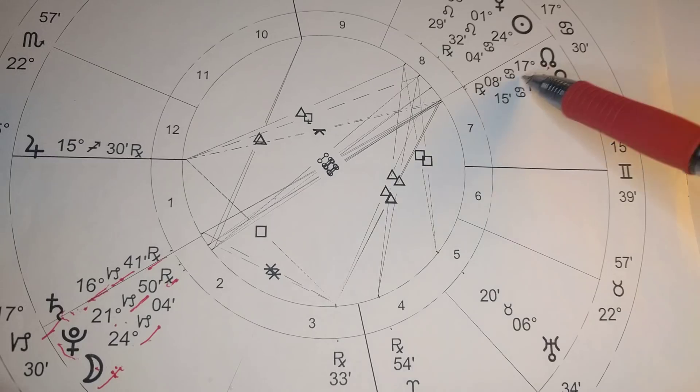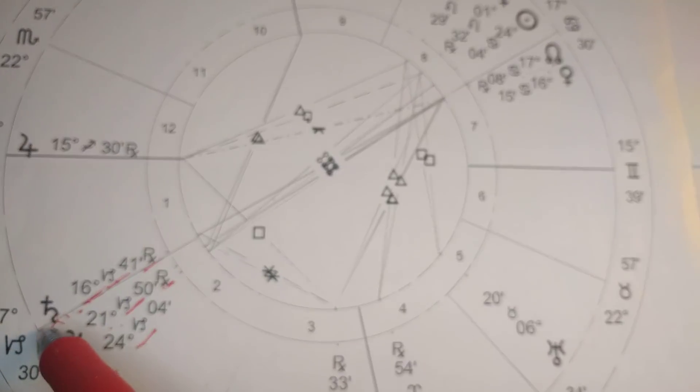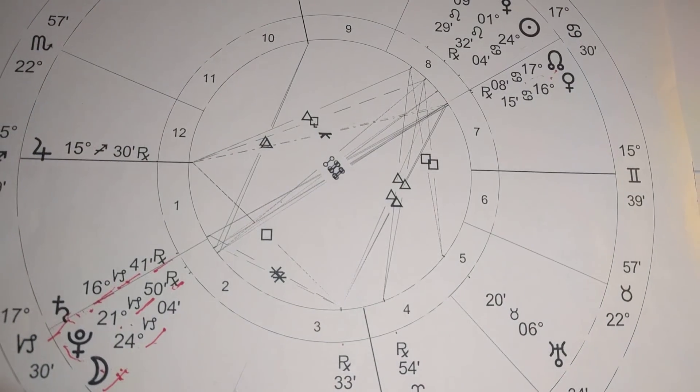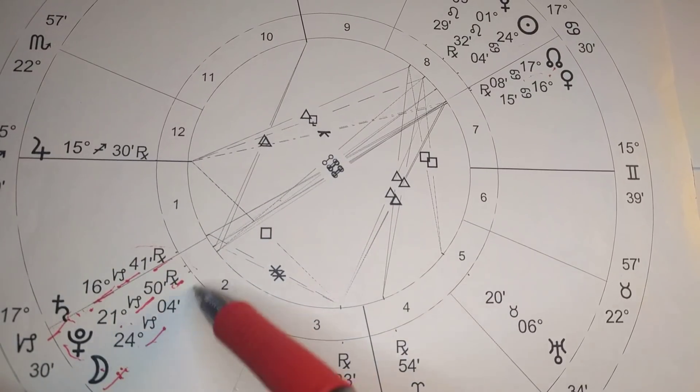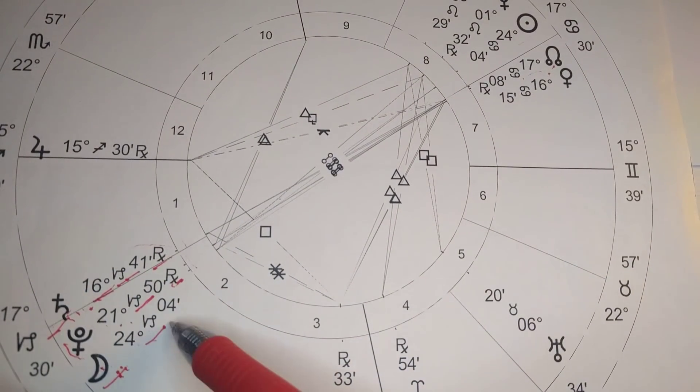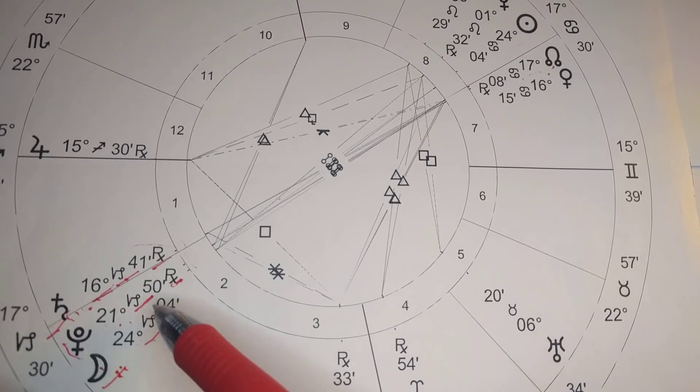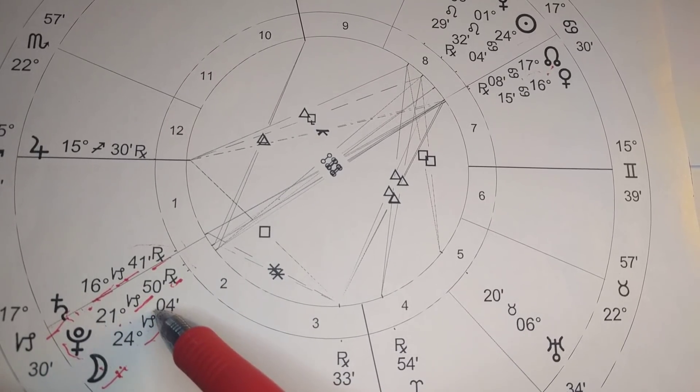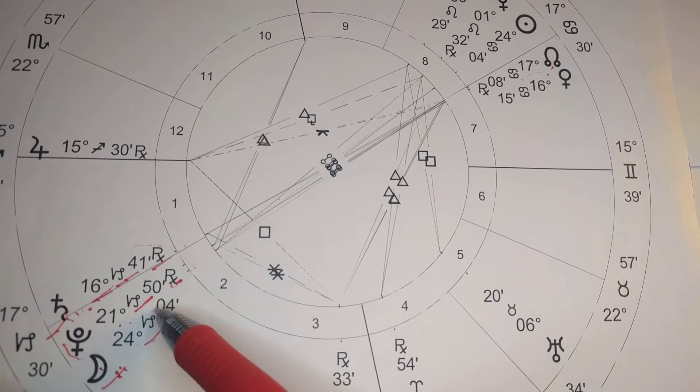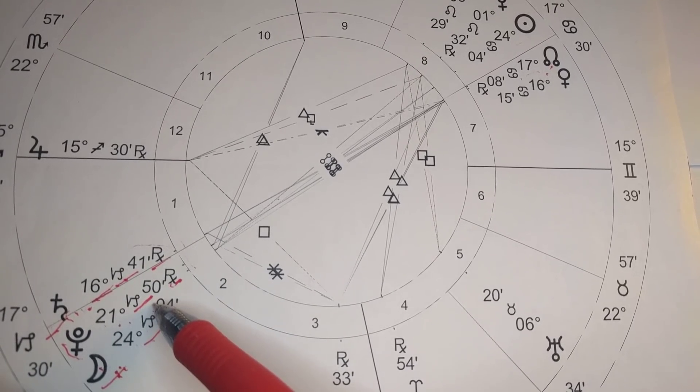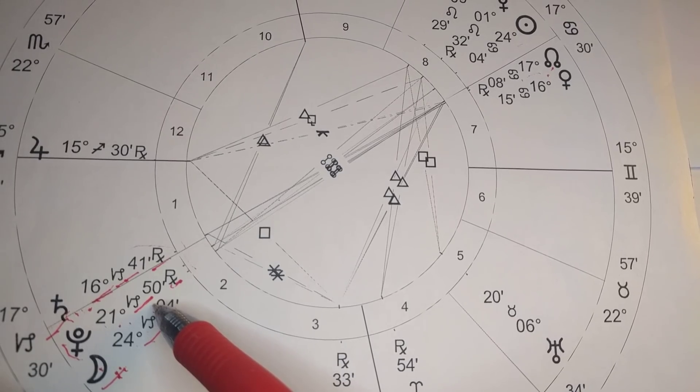It's also exactly conjunct the south node. Here's the north node, so the south node would be at 17 degrees of Capricorn right here. Team Capricorn, as I like to say, is really being amplified in this lunar eclipse.